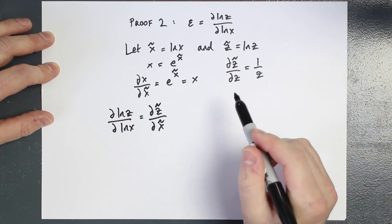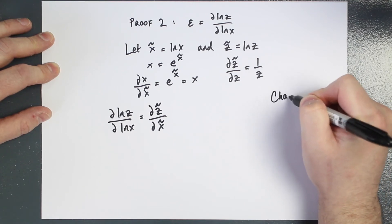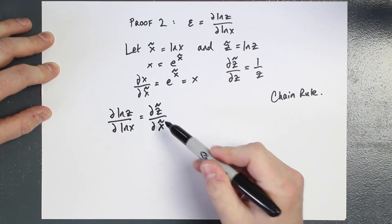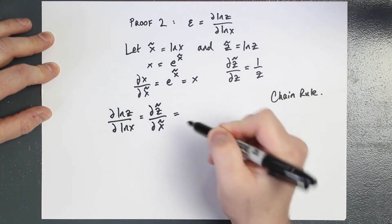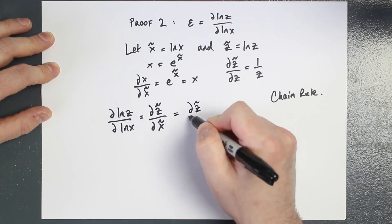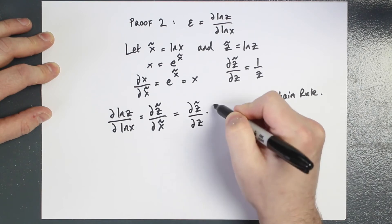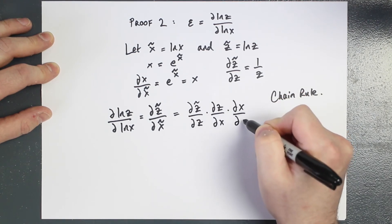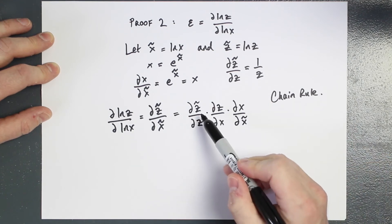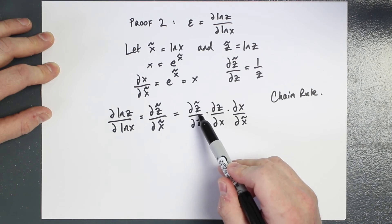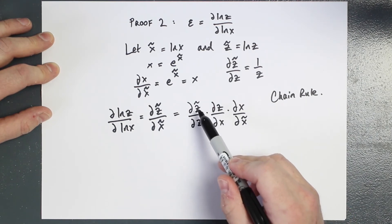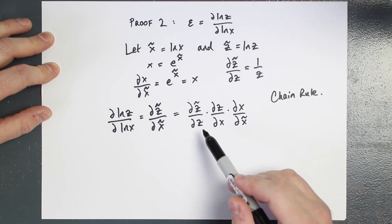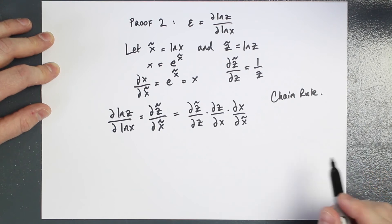That's just renaming the variables. Now I'll use the chain rule. To partially differentiate z-tilde with respect to x-tilde, I form a chain: partially differentiate z-tilde with respect to z, then z with respect to x, then x with respect to x-tilde. You can see the chain — how does z change x-tilde, how does x change z, and how does x-tilde change x. You can form very long chains using the chain rule.